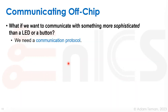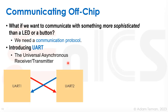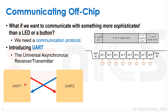What if we need something more sophisticated than an LED or a button? GPIO alone won't build our router — we need a communication protocol. The most common simple standard is UART: the Universal Asynchronous Receiver and Transmitter. It's a very simple protocol where one device talks to another through a unidirectional signal; if the other device wants to reply, it uses its own unidirectional signal, giving us separate transmit and receive lines.